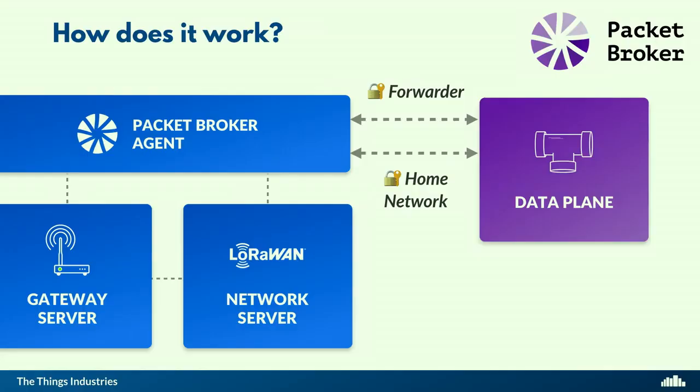The other role is home network: you have devices, you subscribe to uplink messages coming from forwarders on other networks, and you can publish downlink messages. So there are two roles but four directions of traffic exchange. You can also be only a gateway server — just a forwarder — like tower companies or Lacuna Space that only have infrastructure. Or you can have only a network server, a virtual network with no physical infrastructure, that connects to Packet Broker to exchange traffic with other members. Or you can do both.